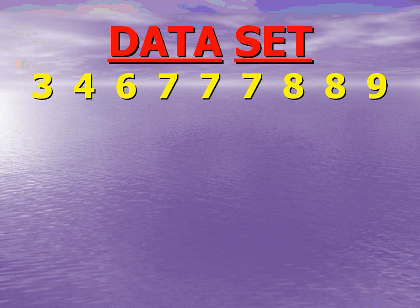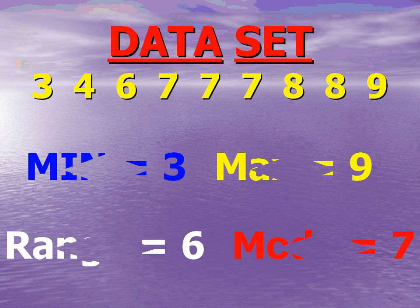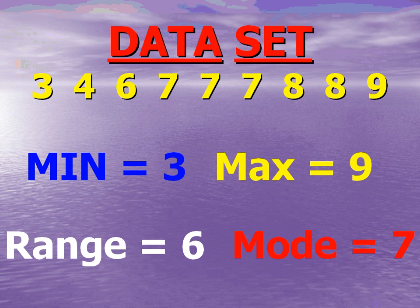Once I have my data set, four of the eight things we're looking for are easy to find right off the bat: the min, the max, the range, and the mode. The min is the smallest number in the data set — three. The max is the largest number — nine. The range is the difference between the max and the min; nine minus three equals six, so six is my range. And the mode — by definition, the mode is the number that appears most often in your data set. In this data set, the number that appears most often is seven, so that's my mode.